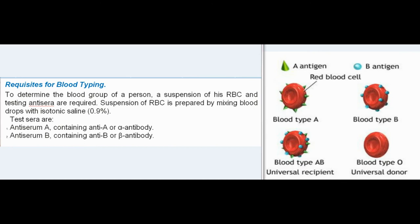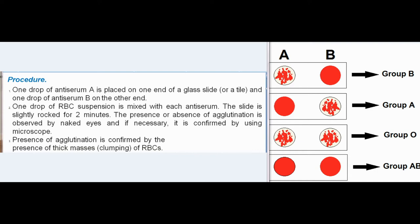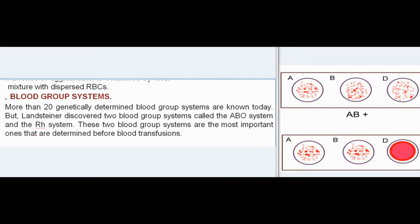Requisites for Blood Typing: To determine the blood group of a person, a suspension of RBCs and testing anti-sera are required. The suspension of RBCs is prepared by mixing blood drops with isotonic saline (0.9%). Test sera used are Antiserum A, containing anti-A (alpha antibody), and Antiserum B, containing anti-B (beta antibody). Procedure: One drop of antiserum A is placed on one end of a glass slide or tile, and one drop of antiserum B on the other end. One drop of RBC suspension is mixed with each antiserum. The slide is slightly rocked for 2 minutes. The presence or absence of agglutination is observed by naked eye and confirmed by microscope if necessary. Agglutination is confirmed by thick masses (clumping) of RBCs; absence is confirmed by a clear mixture with dispersed RBCs.